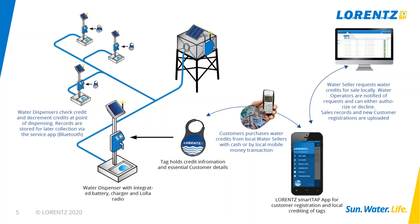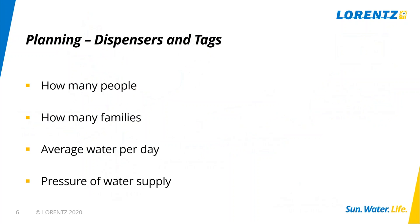The basic questions we need when first looking at installing a water dispenser network are these four: how many people are in the community being served, how many families there are, the average water per day that people are buying or that the water system is designed for, and the pressure of the water supply. Understanding whether you have very low or high pressure and what the flows are like is really important for planning the number of dispensers.